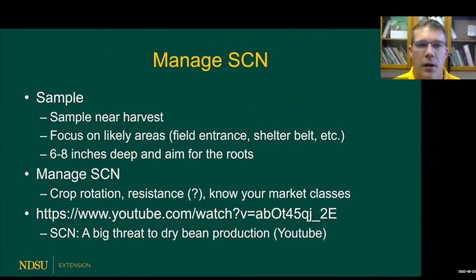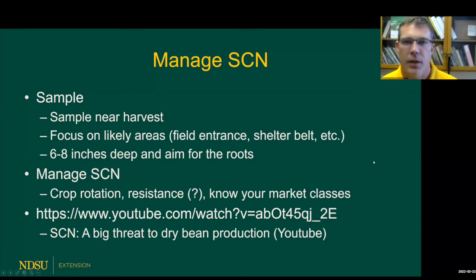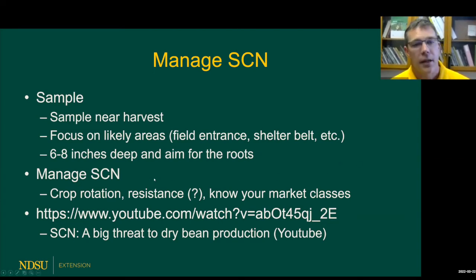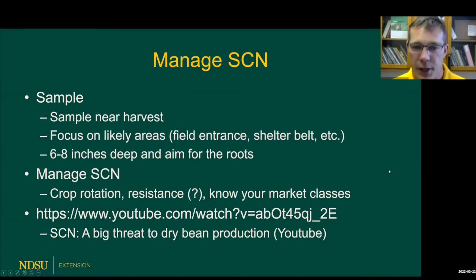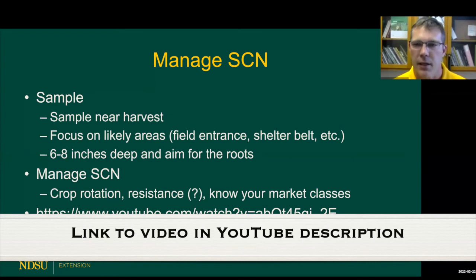To manage SCN, we are encouraging everyone to sample. The best time to sample is at harvest, because SCN lives in the soil and reproduces — it runs that life cycle a couple of turns during the growing season, so levels will be highest at the end of the season. Focus on areas where you're likely to find it first, where soil might move in: field entrances, blowing through a shelter belt, flood water. Sample six to eight inches deep and aim for the roots — it's different than fertility sampling. To manage it, we talked about crop rotation and resistance by market class. There is a video you can check out about SCN and dry beans that was put together about five years ago with more detail on how SCN and dry beans work together.